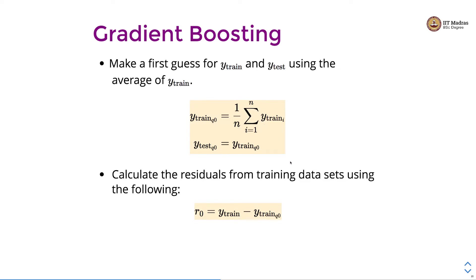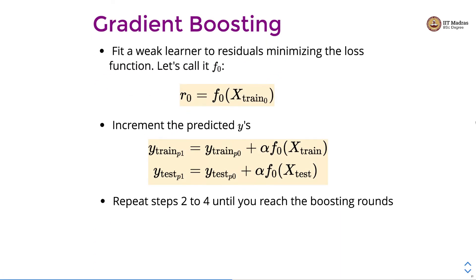We calculate the residuals from the training dataset using the following equation. R0, which is the residual, is calculated as y-train minus y-train-hat-0. This is like the first estimator or first classifier or regressor that has given us some prediction, and we calculate the residual error by subtracting that prediction from the actual value. Then we fit a weak learner to the residuals to minimize the loss function — let's call this weak learner F0.